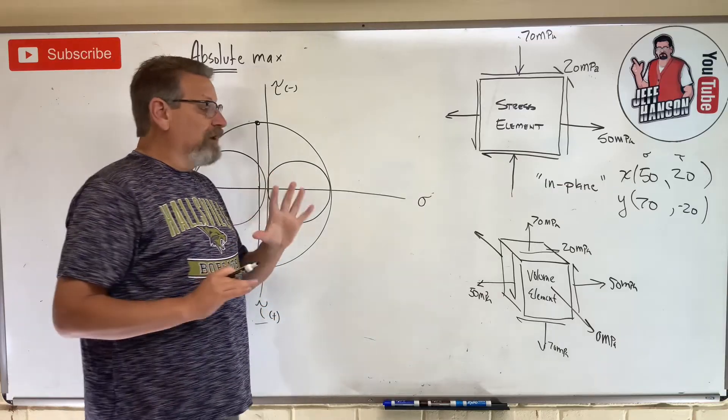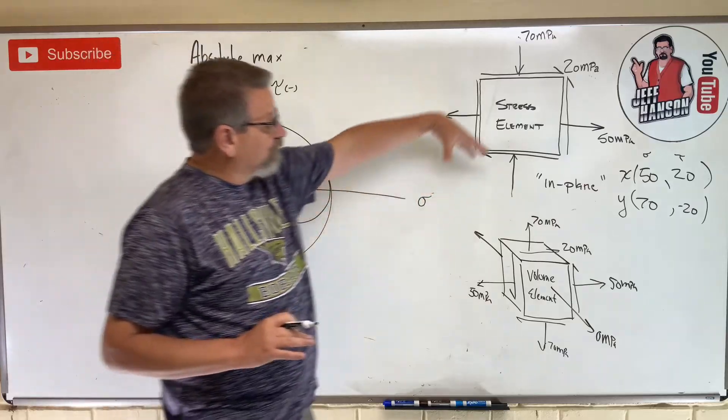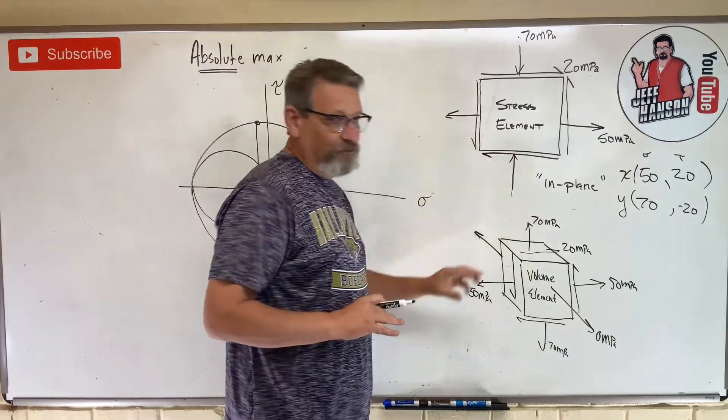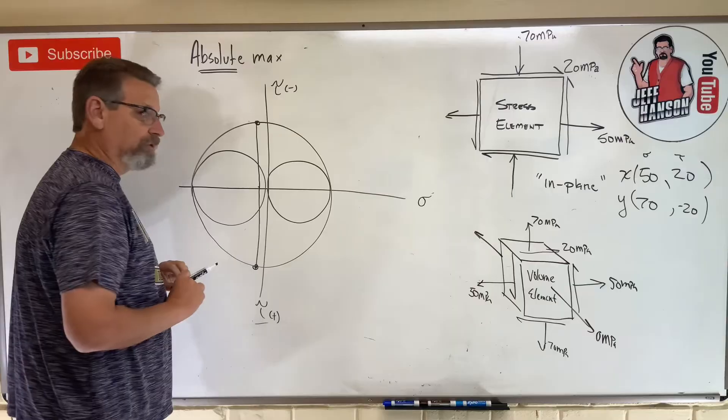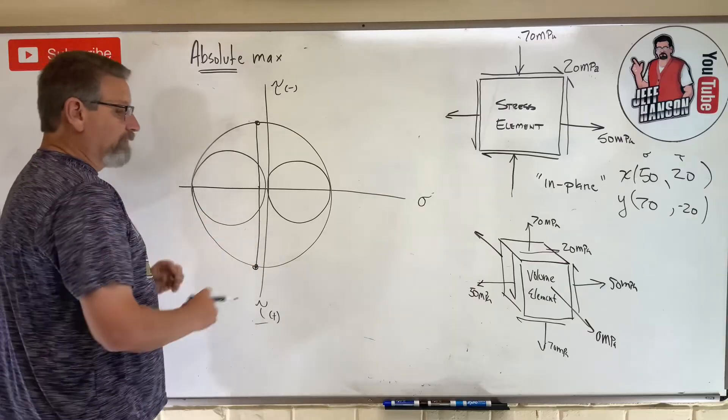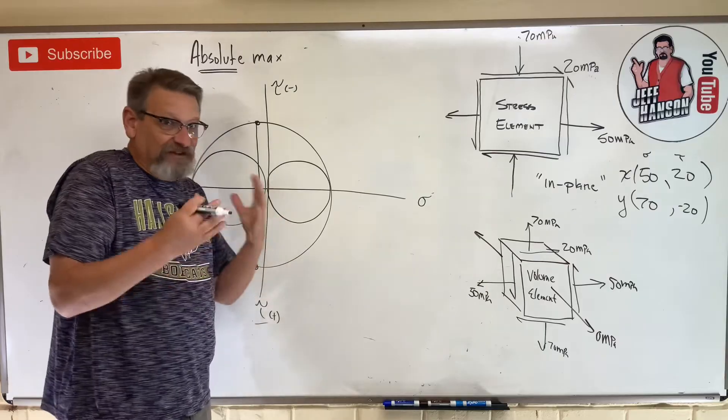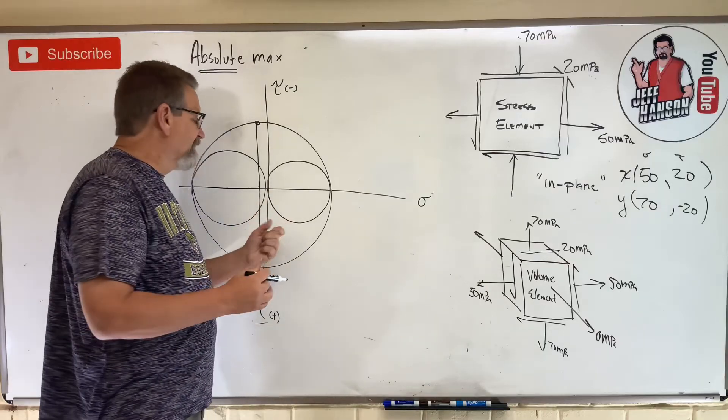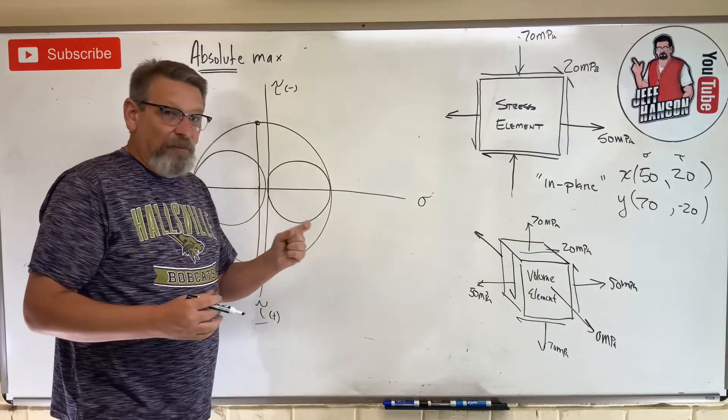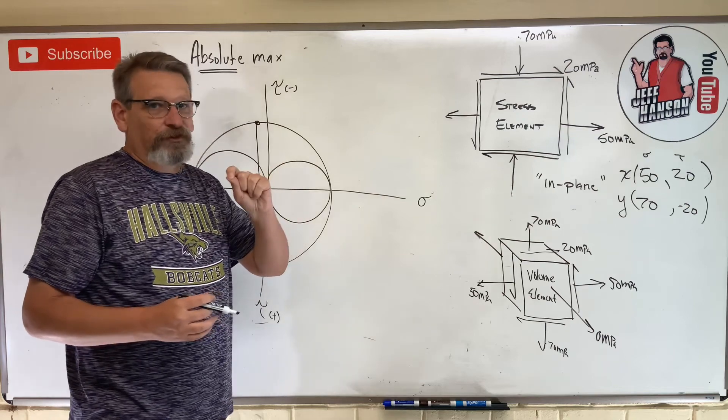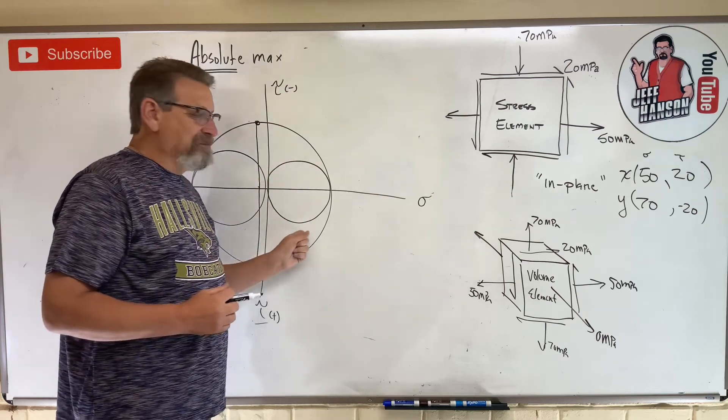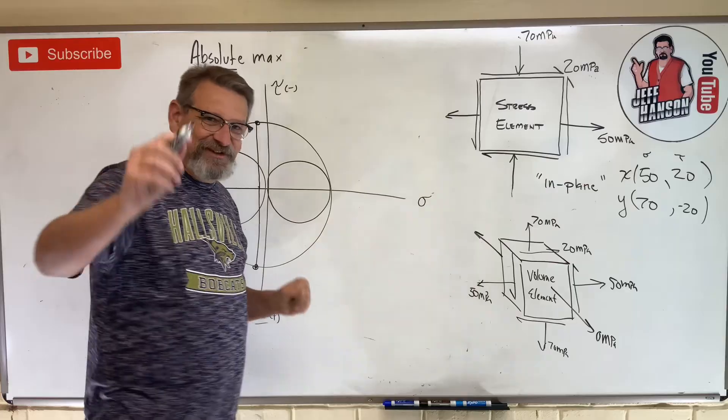Are you with me? So, really, all we're doing is we took that volume element, and we're just looking at it from different directions, and constructing a Mohr circle, and then saying, which one of those circles has the biggest radius? Because the one with the biggest radius, the radius is tau max, so we're trying to find tau max absolute, which one of those circles has the biggest radius. Man, I hope that helps. I'll see you on the next video.